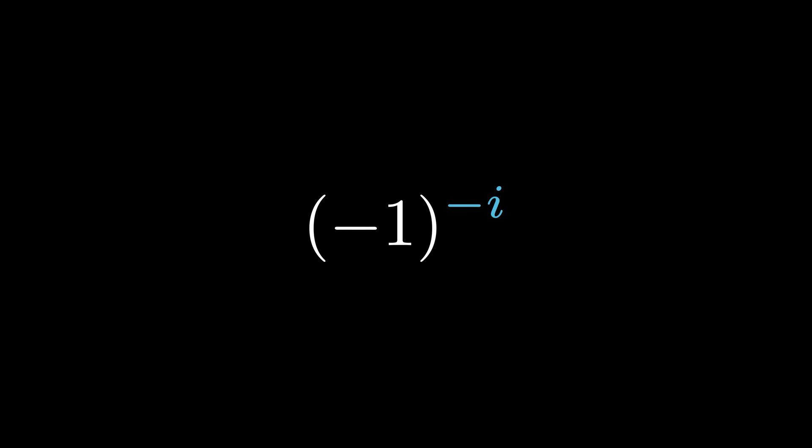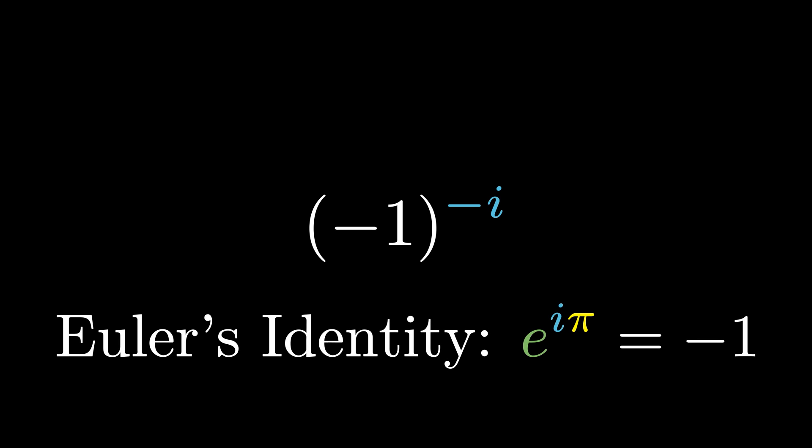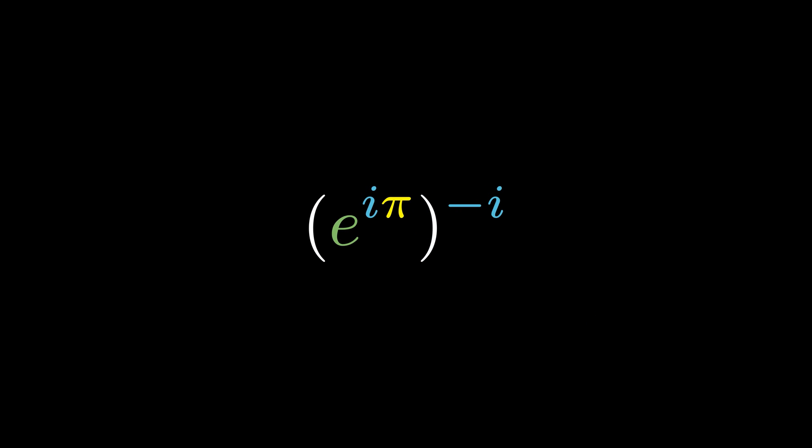Why is this interesting? Well, according to Euler's identity, e to the i pi is negative 1. So negative 1 to the negative i is e to the i pi to the negative i, which is e to the negative i squared pi, which is just e to the pi. Hence, by the Gelfond-Schneider theorem, e to the pi is transcendental.